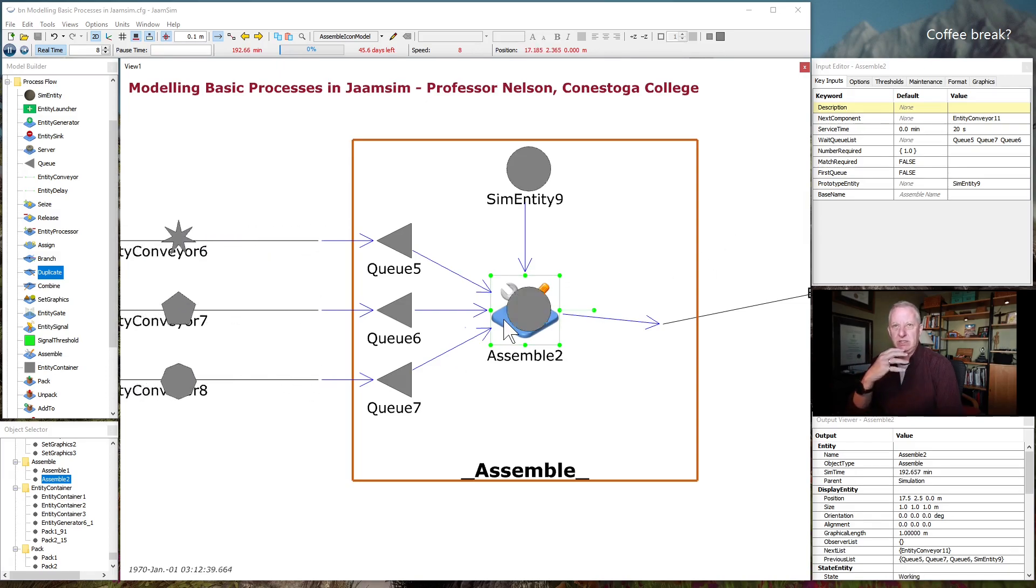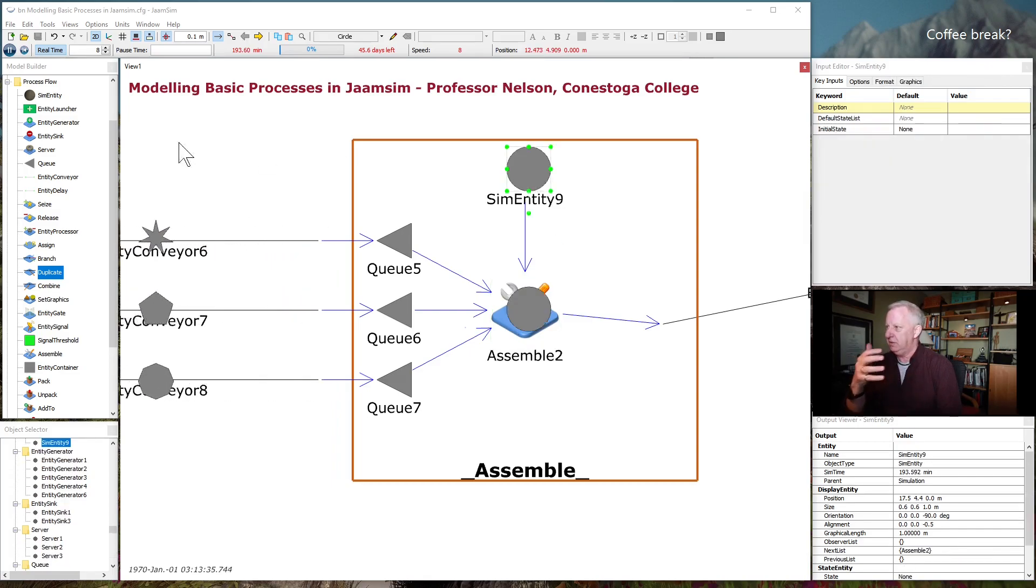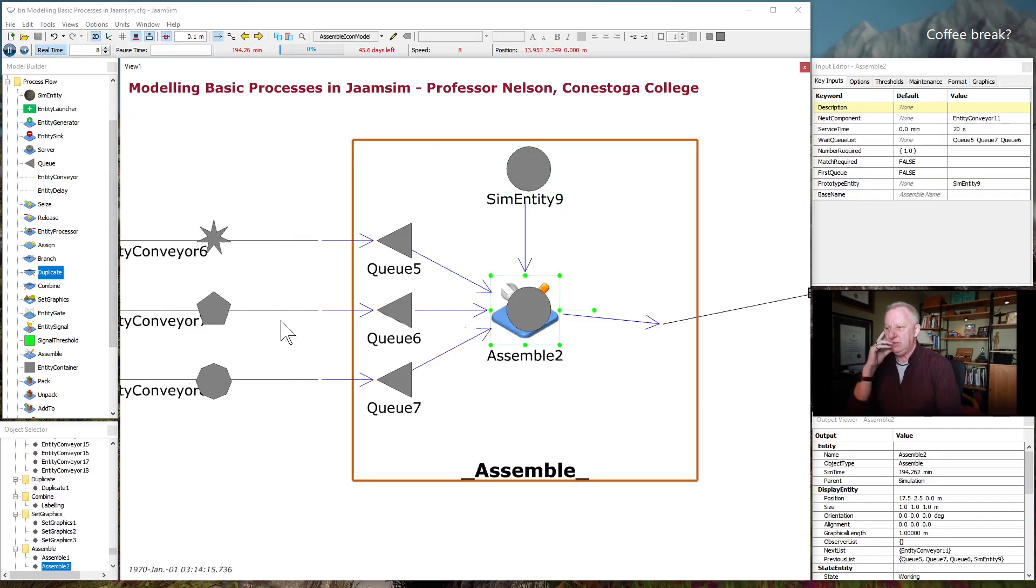Send the material on to conveyor 11. And the prototype entity here, sim entity 9, is what the assembly will look like once it's done. So this one, it's like a change graphics built into the tool. So you need to bring a sim entity in. I've made this one just a circle. And the assembly 2 will take whatever these separate components are and consume them in the assembly operation and pass on this new entity. And that kind of makes sense from an assembly point of view. If you're putting a bunch of materials together, you're no longer sending out a batch of components. You're sending out something new, an assembly.